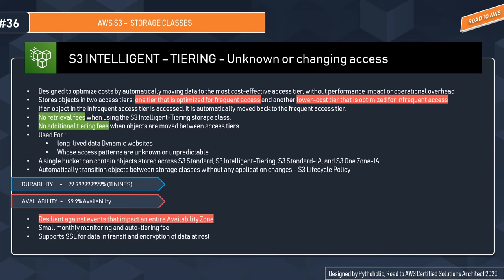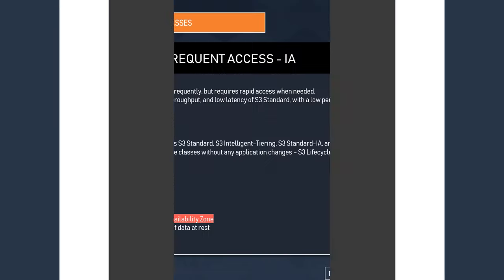A single bucket can contain objects stored across S3 Standard, S3 IA, S3 Intelligent Tiering, and S3 One Zone IA, and it will automatically transition objects between storage classes via lifecycle policy. It is designed for 11 nines durability across multiple availability zones and 99.9% availability over a given year. A small monthly monitoring and auto-tiering fee applies, and it supports SSL for data in transit and encryption at rest.